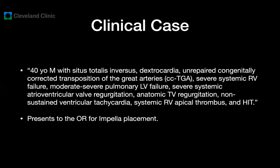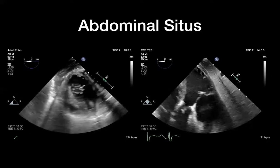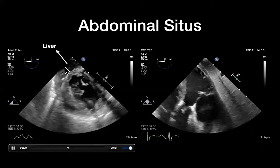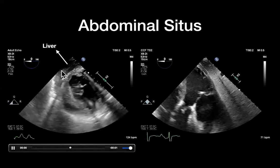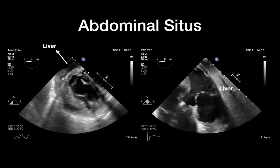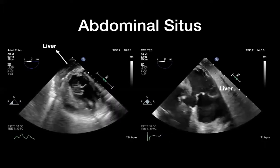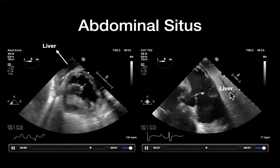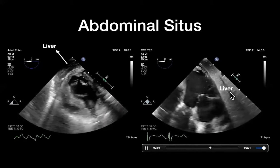Now let's go back to our clinical case and apply these concepts. The transgastric view of the base of the right ventricle on the left shows that there is almost no liver here — this is the morphologic right ventricle, you see a tri-leaflet valve, and there is very little liver; we should see a lot of liver close to that right ventricle. Now look at the deep transgastric view: the liver is on the right side of the display, which is the left side of the patient. This means most likely the abdominal situs is inversus.